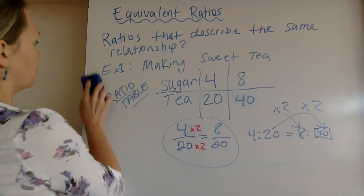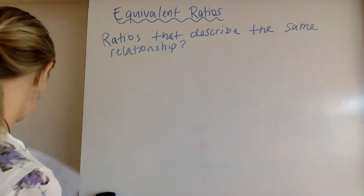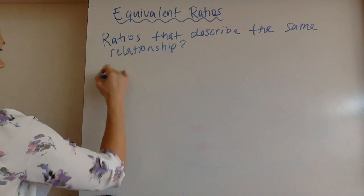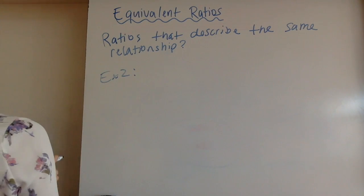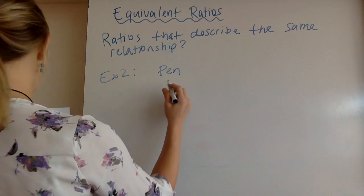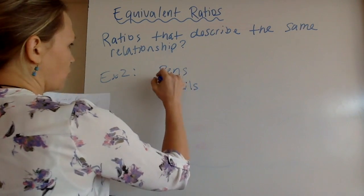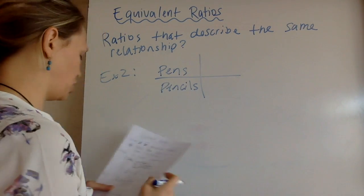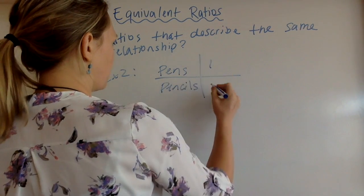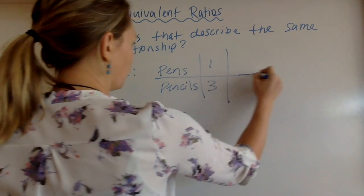All right, example two. I'm not going to give you a big backstory. I'm just going to say, you open up your pencil case, and you've got pens in it, and you've got pencils in it. And you and all your classmates have the same ratio. And let's say you have one pen and three pencils.